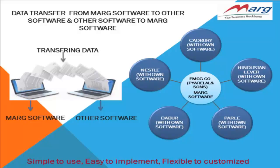With this tool, anyone using different types of multiple softwares can see the consolidated outstanding of a particular customer. For example, if a FMCG distributor has agencies of Parley, Cadbury, Hindustan Liver, and Dabar India, and he sells all products of these companies to Pyarelal and Sons, he can now transfer all the sales vouchers into Mark and see the outstanding of Pyarelal in one go.